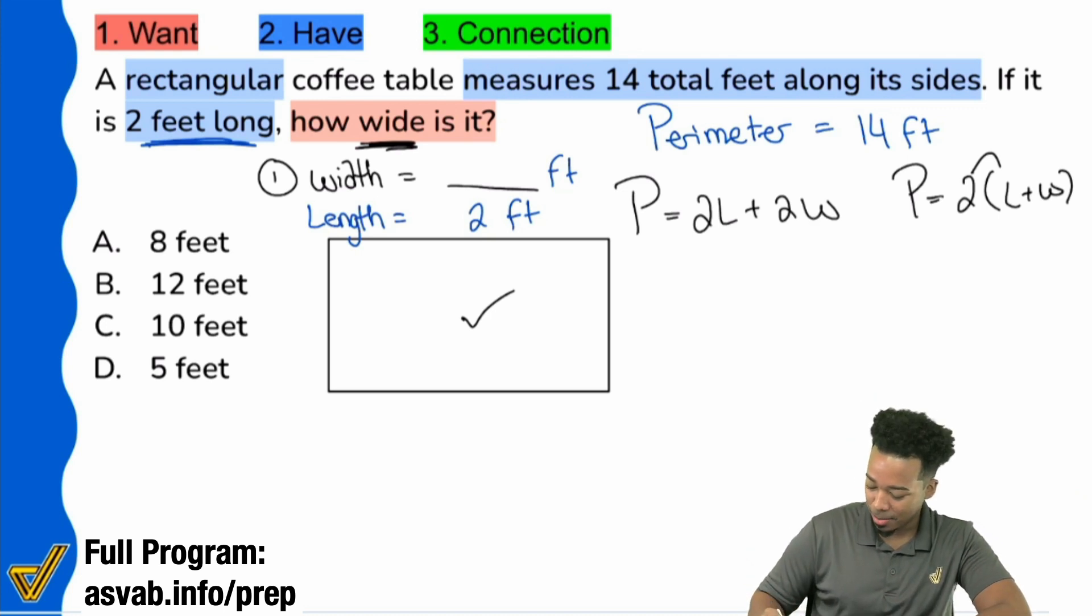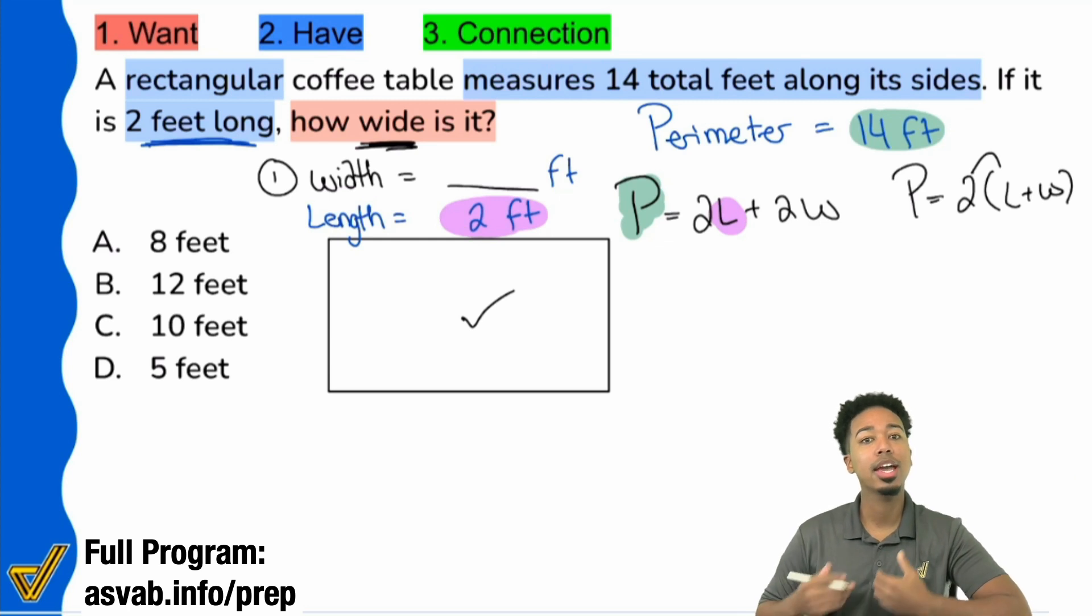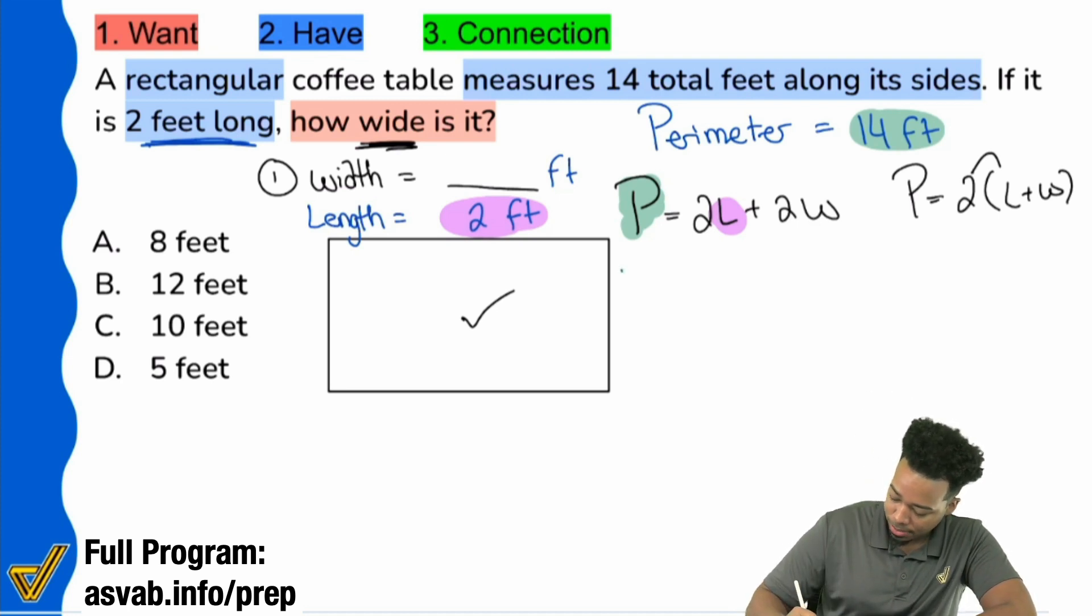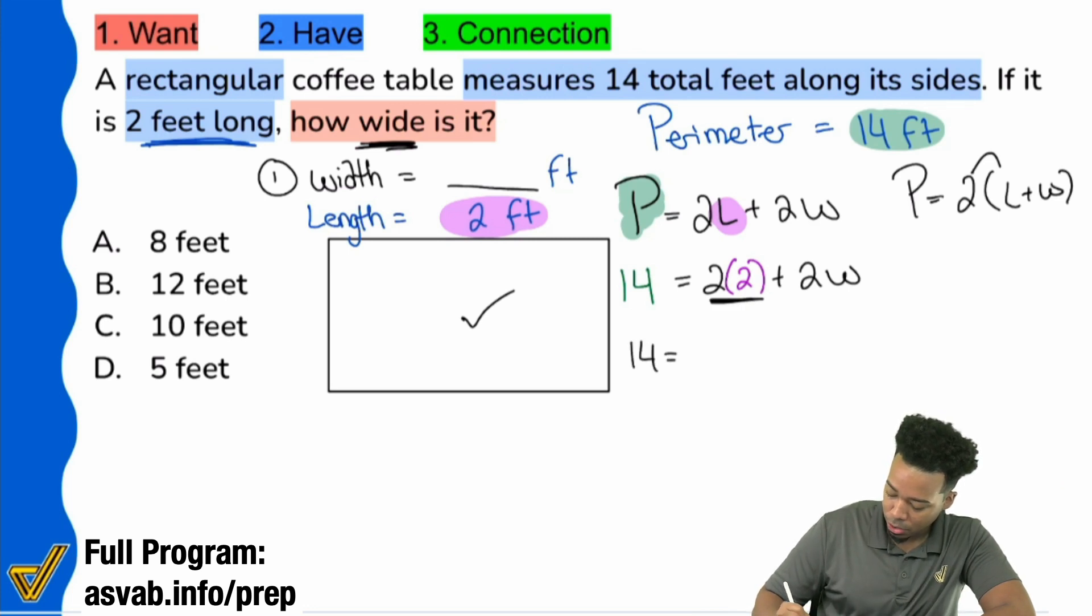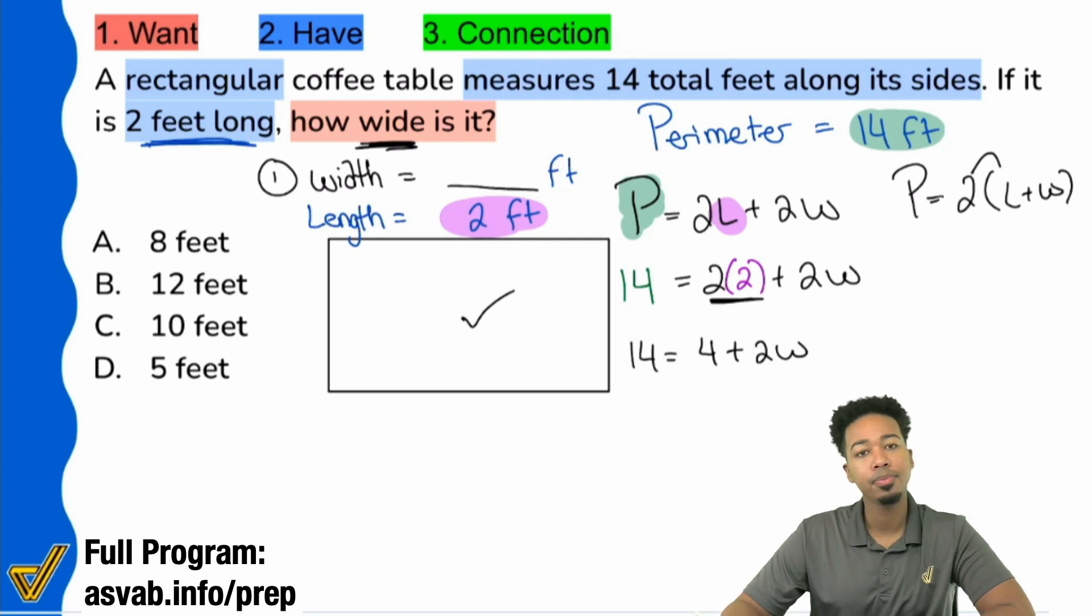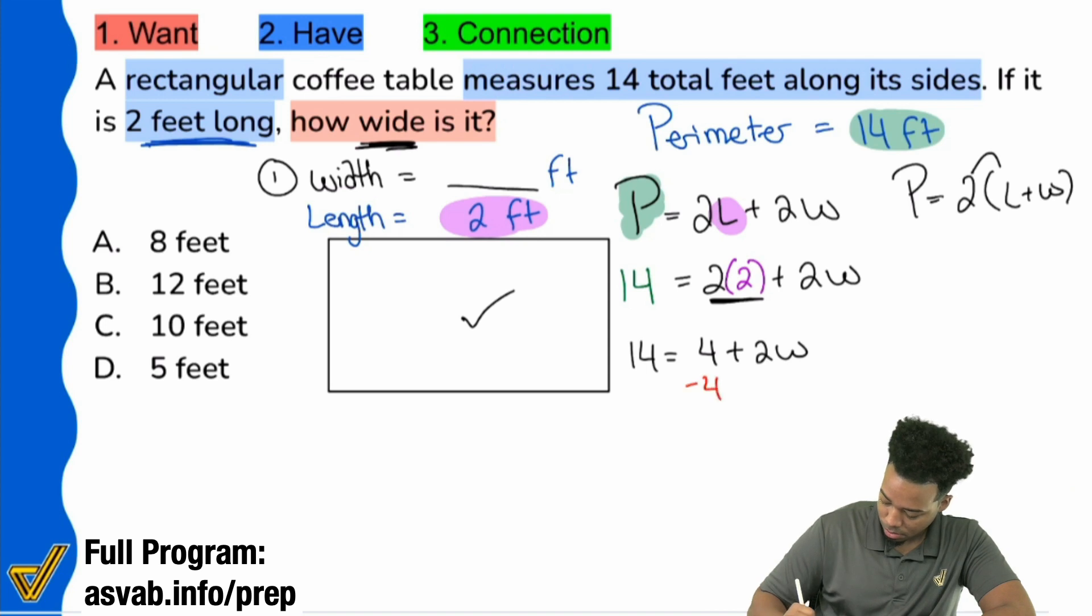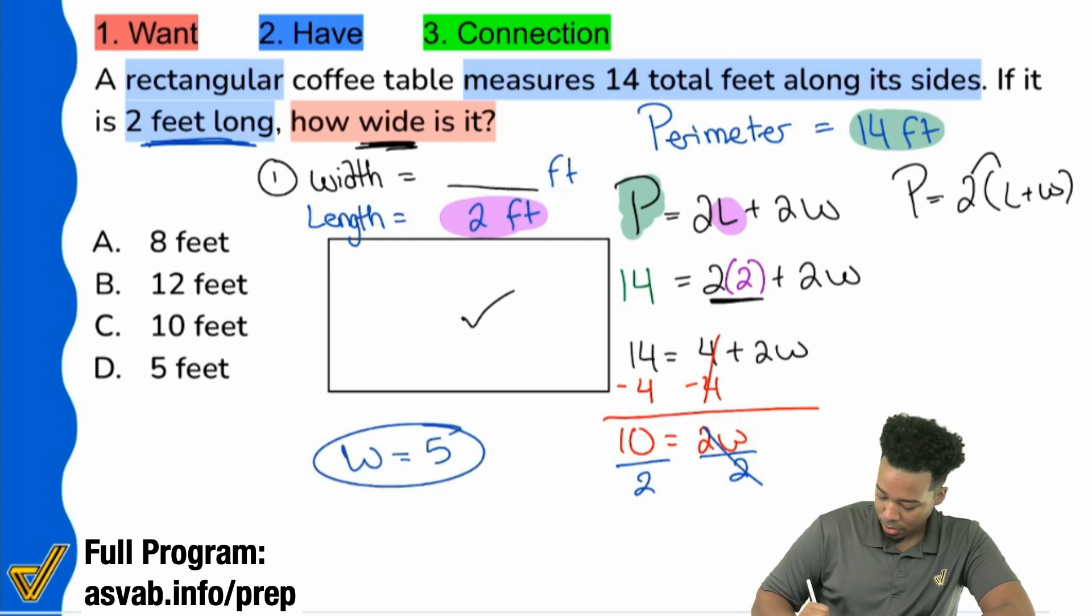We're going to plug in the 14 for the perimeter and the two for the length. It's now an equation that you can solve to find that width. Our perimeter is going to be 14, and then we'll do two times the two feet plus 2W. We'll start off by multiplying the two times two, so we'll have 14 equals four plus 2W. Now we'll subtract four from both sides, and that's going to be 10 equals 2W. Lastly, we'll divide both sides by two, and that's going to give us W equals five. The width is five feet. The answer there is D, five feet.